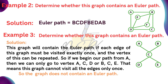We will see that two edges cannot be covered exactly once. The edges A-C, C-E, E-C, C-D, D-C, C-B show that it is not possible to visit every edge exactly once. Therefore, this graph contains no Euler path.